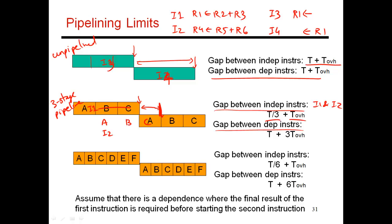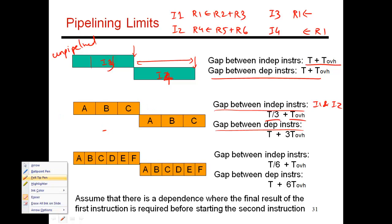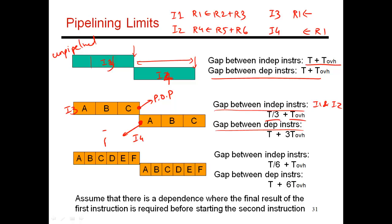Now let's look at the gap between the dependent instructions, I3 and I4. So let's say that I3 begins over here. And let's say that this is my point of production. This is when I have a result. And if I assume that for I4, the point of consumption is early on, then I have to wait until C is done before I can start I4. I have to make sure that the C of I3 is done before I can start I4. So to make sure that the point of consumption happens after point of production, instructions have to be staggered this way. And the gap between the completion times of these two dependent instructions